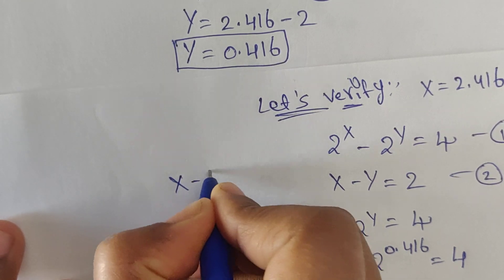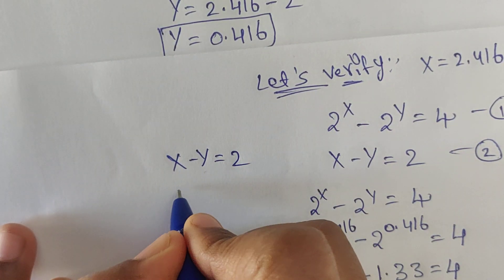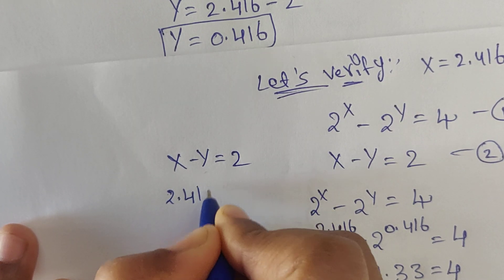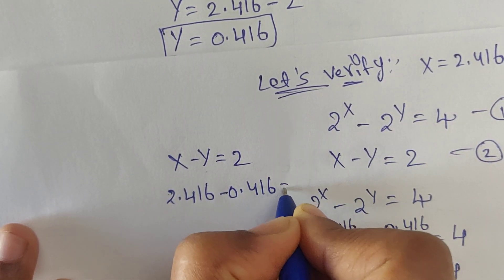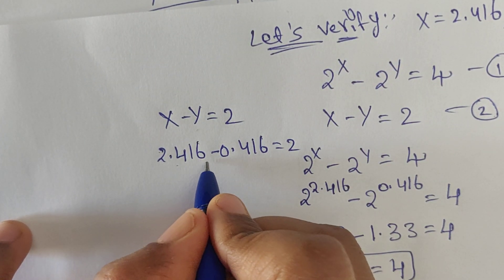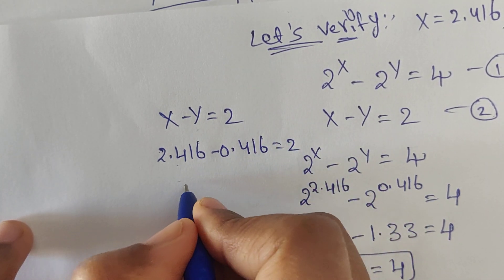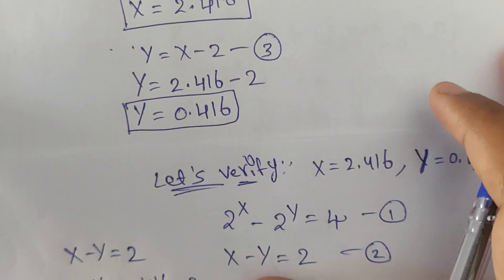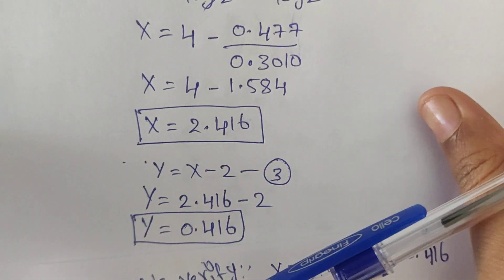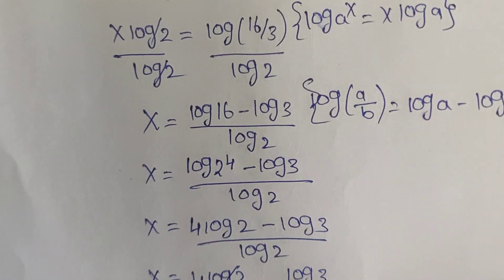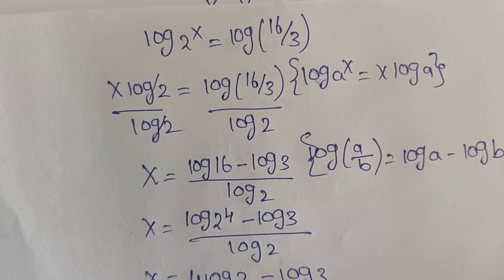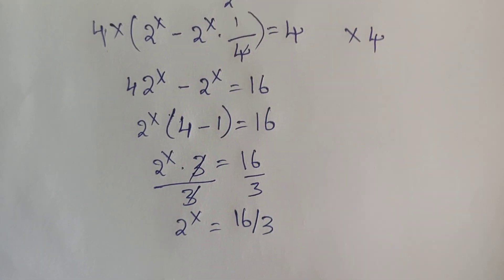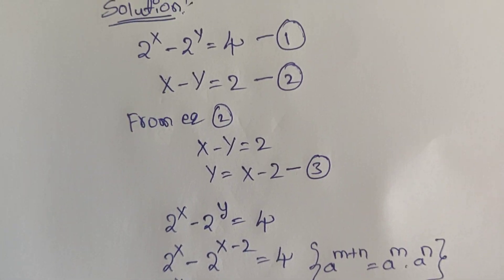Checking equation 2: x minus y equals 2. Substituting the values: 2.416 minus 0.416 equals 2. So 2 equals 2 — this is also true. So the values of x and y are the right answer. Both are correct. Thank you for watching — please do subscribe for more videos. Thank you.